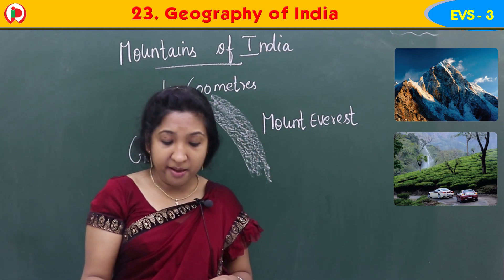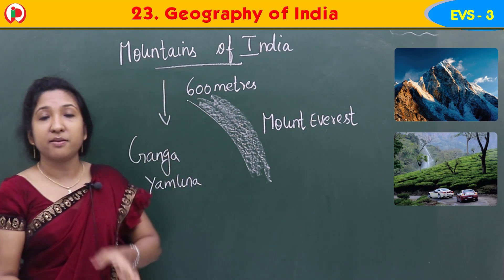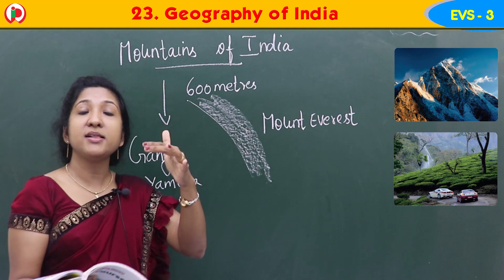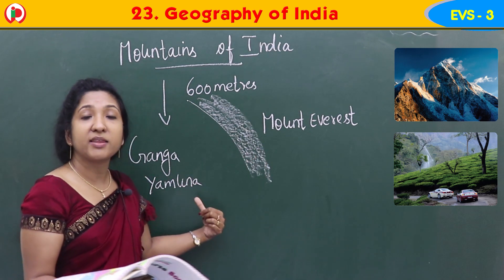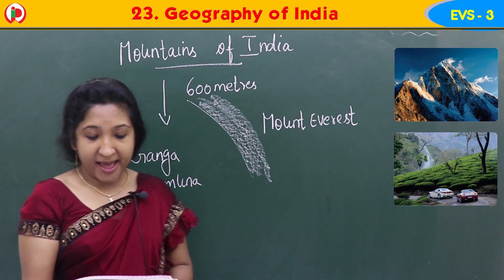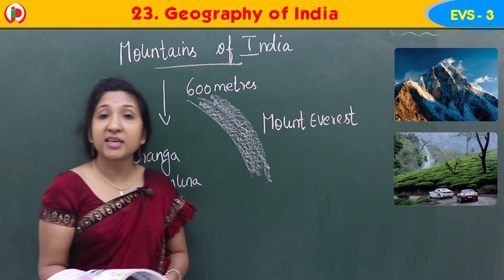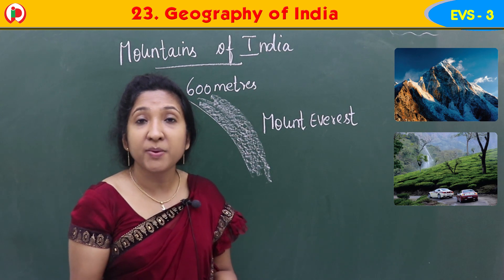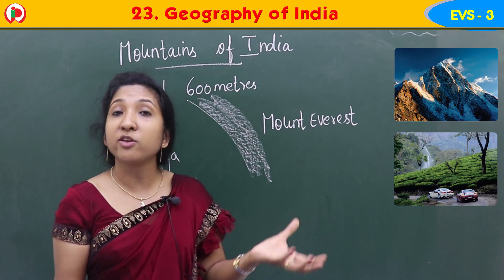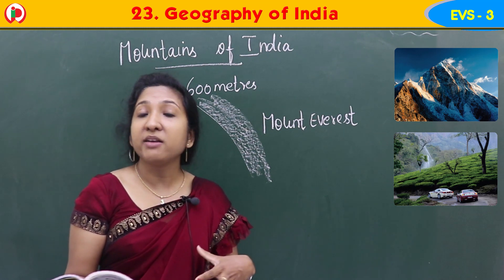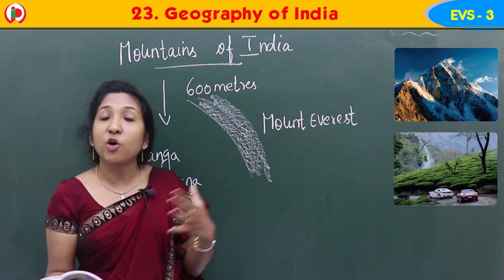Many rivers like Ganga and Yamuna flow from the mountain ranges to the plains. The top of mountains is filled with snow; snow melts and water flows and joins the rivers. Mount Everest is the highest peak in India. Lower mountain ranges are in the central part — Vindhya and Satpura ranges — and in the southern part we have Nilgiri hills in Tamil Nadu.